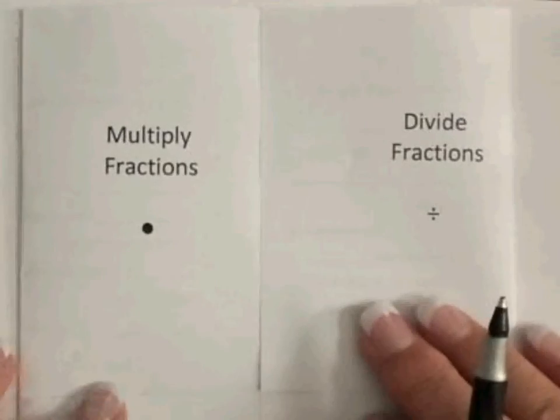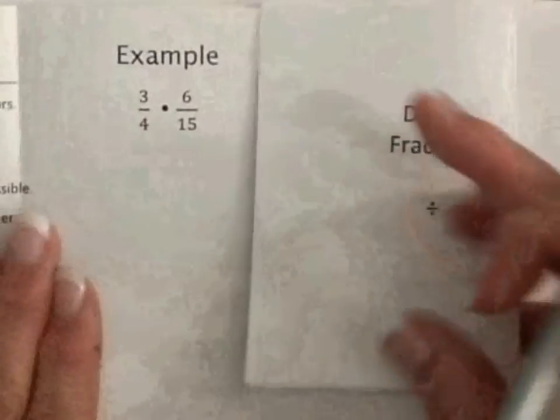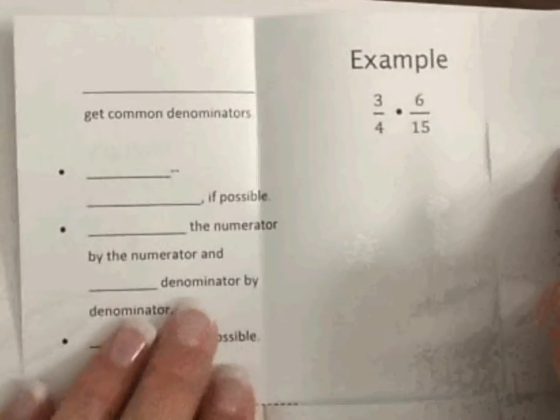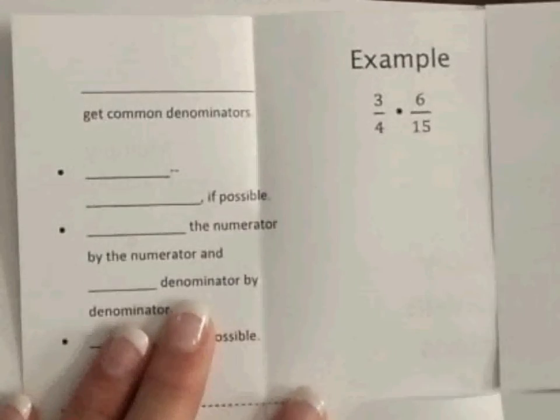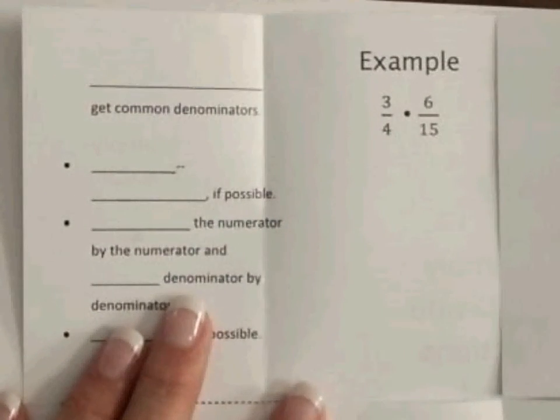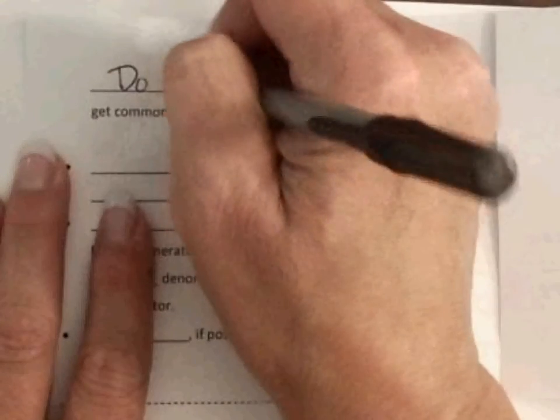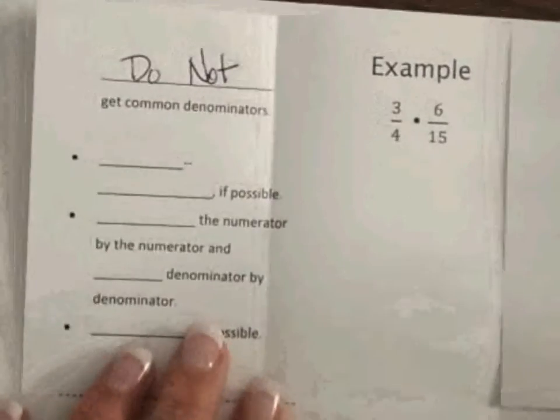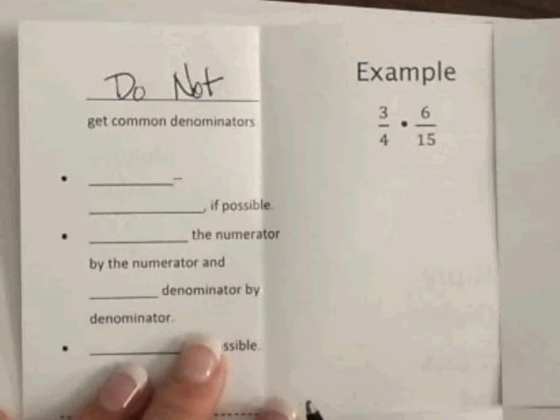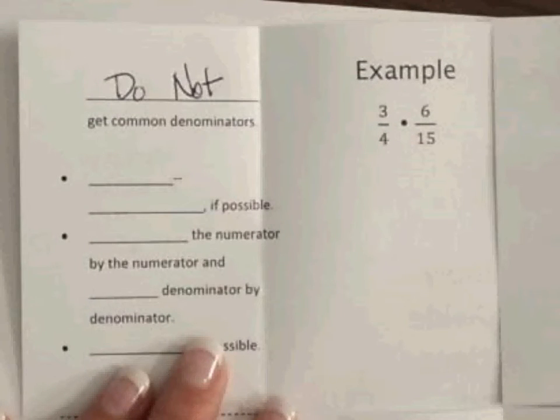You should already have this glued into your journal. So, multiplying fractions. Open it up. When we're multiplying fractions, we do not need to get a common denominator. We don't have to do it. You would get the same answer if you did, but it's a whole lot more work. So, the first thing we're going to do is cross-reduce.